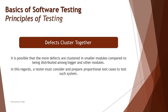Principle number four states: defects cluster together. The name suggests that there could be a possibility that defects can cluster together. Cluster basically is about grouping together, gathering at a place — and we are talking about defects grouping. When we talk about testing, we certainly have defects distributed across the system generally.